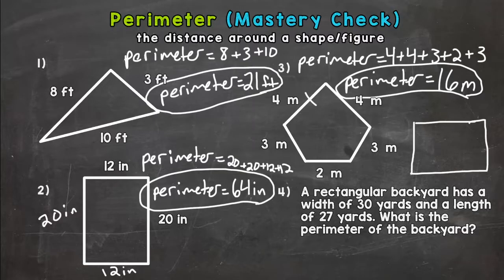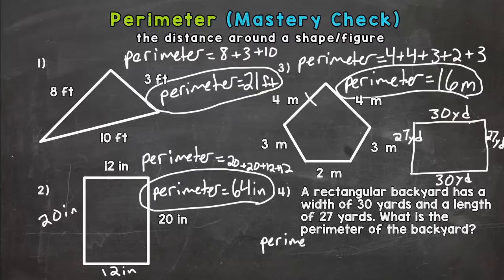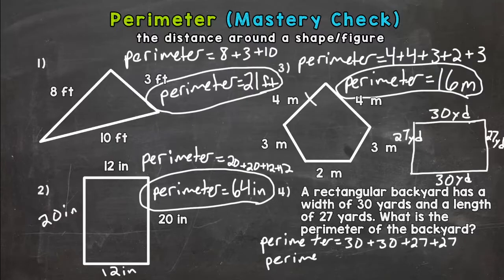So I'll do 30 yards and 27. I'm going to fill in all of my sides. All right, so we have perimeter equals 30 plus 30 plus 27 plus 27. So let's calculate: 30 plus 30 is 60.